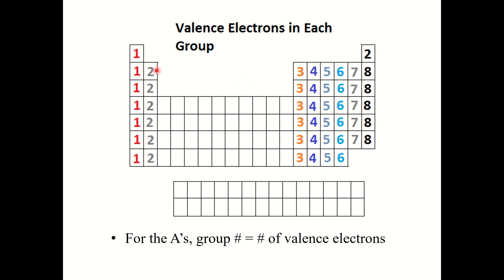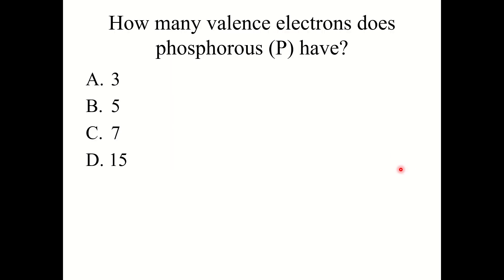Valence electrons in each group: for the main group elements, the group number equals the number of valence electrons. So group 1A elements have one valence electron, group 2A elements have two valence electrons, and so on. For example: how many valence electrons does phosphorus have? Phosphorus is in group 15 or 5A, which means it has five valence electrons.